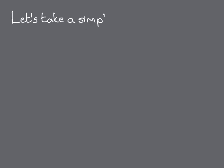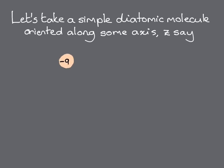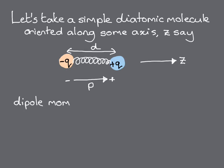So let's start with the simplest possible case of a diatomic molecule consisting of an anion of charge minus Q bonded to a cation of charge plus Q with bond length D, and we'll orient it along the z-axis. Remember that the dipole moment, we'll call it P, points from negative to positive charge, so in this case it points along plus z. And using the simple definition of dipole moment being the product of the size of the charge times the distance between the two charges, we obtain P is equal to Q times D.